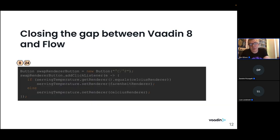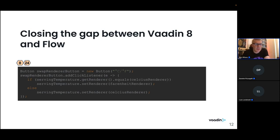One easy feature to review is SetRenderer. In Vaadin 8, SetRenderer allowed you to set or change the renderer of a column after it had been created. In Vaadin Flow initially, the renderer could only be attached at column creation time. In Vaadin 24.1, we reintroduced the SetRenderer method — the source code is the same in Vaadin 8 and Vaadin 24.